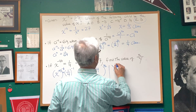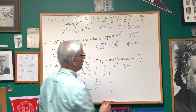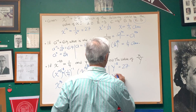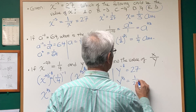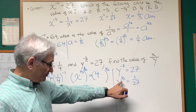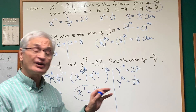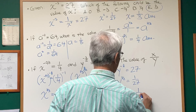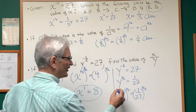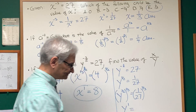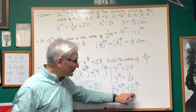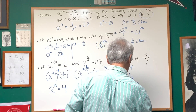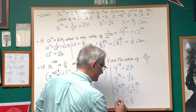Now, Y to the negative three halves power is 27. We raise each side to the negative one power, which gives us Y to the three halves is equal to one over 27. Then we take each side of the equation to the two thirds power. Three halves times two thirds is one, giving Y to the one. The three in the denominator says take the cube root of one over 27, which is one third. The two says square that — one third squared is one ninth. So Y is equal to one ninth.